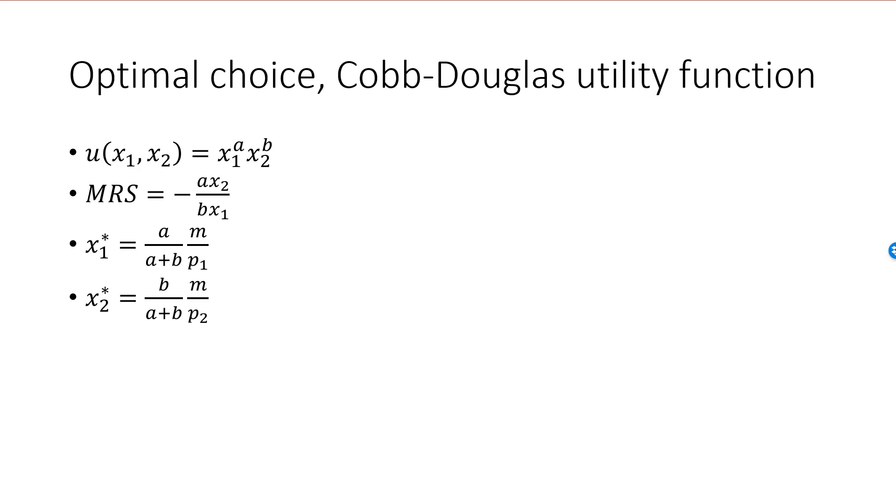Here is the summary of optimal choice when we have an arbitrary Cobb-Douglas utility function. u is equal to x1 to the a, plus x2 to the b. MRS is equal to minus ax2 divided by bx1. Optimal consumption of good 1 is x1 star equal to a over a plus b times m over p1. x2 star is equal to b over a plus b times m over p2. You can see that if a is equal to b, then x1 star is one half m over p1, and x2 star is one half m over p2.